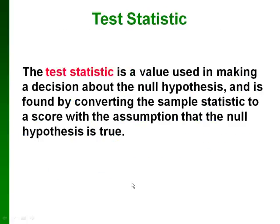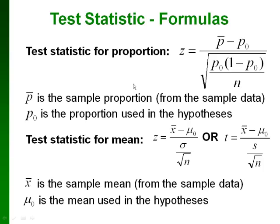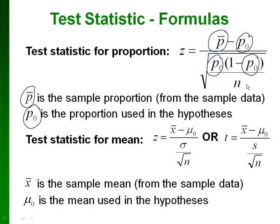The second topic in this video is how to pick the right test statistic formula. When doing a hypothesis test you must know what type of test you're doing and which formula to pick. The test statistic is what helps us decide the conclusion of our test, and we get its value from our sample data. If we're dealing with a claim about a proportion, we use the proportion formula, where P-bar is the sample proportion, P₀ is the proportion from the hypotheses, and n is the sample size.